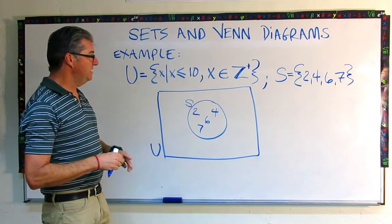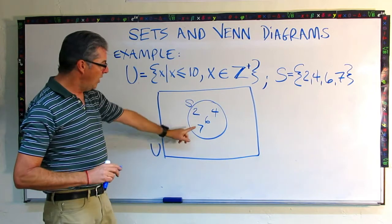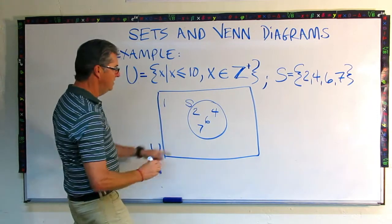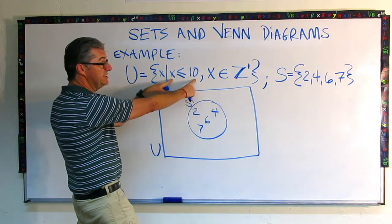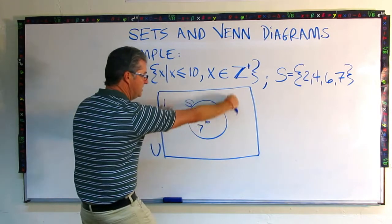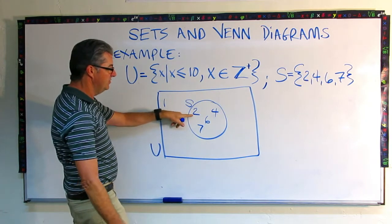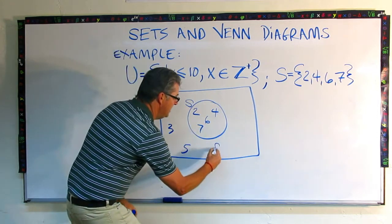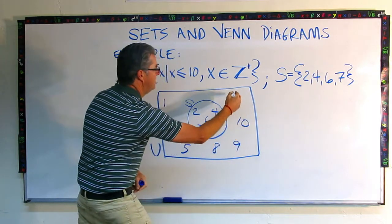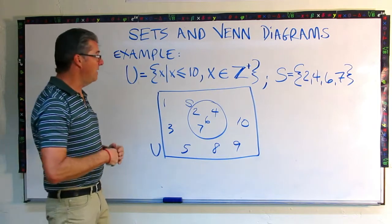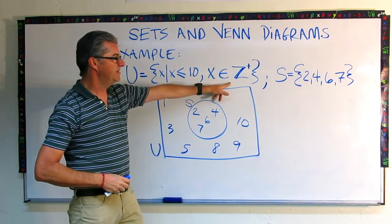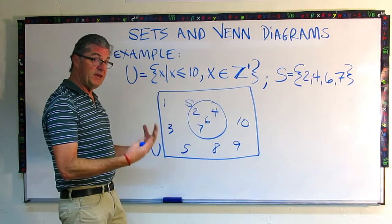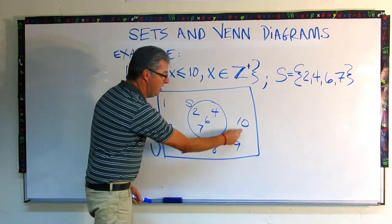Now we're not done because we need to show where the other members of U are. So what members of this universal set are not in S and that would be the number 1. Because remember, it's 1 through 10, including 10. So whatever's not in here goes in this area out here. So 1, we need that. We have 2. We need 3. We have 4. We need 5, 6, 7, 8, 9, 10, and that's it. So this is a correct Venn diagram for this situation where our universal set is described as so. Here's our subset. We put the subset inside, wholly contained inside the universal set, and then we throw in the remaining members of the universal set that are not in the subset.